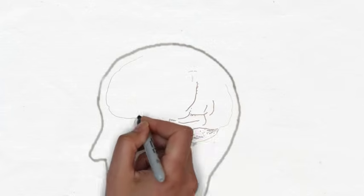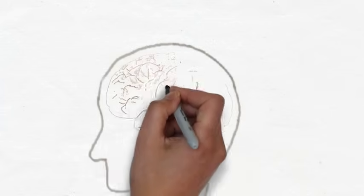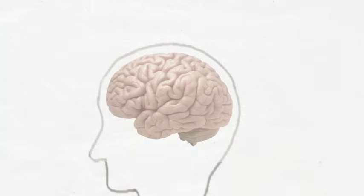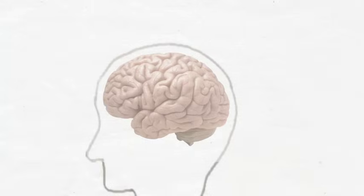This is a brain. Estimates vary, but right now the best guess seems to be that our brains contain around 85 billion neurons. The neuron is a nerve cell, and it's the primary functional unit of the nervous system.